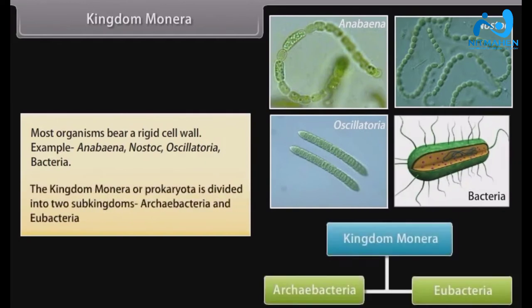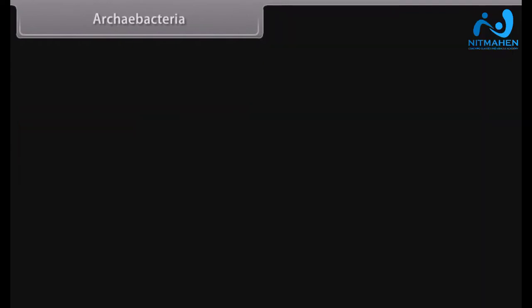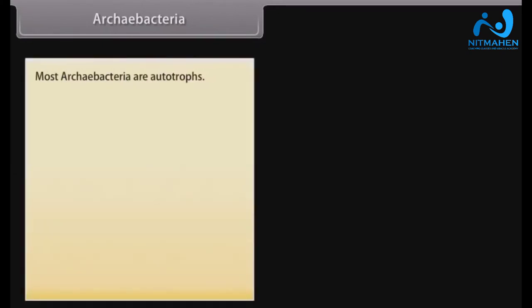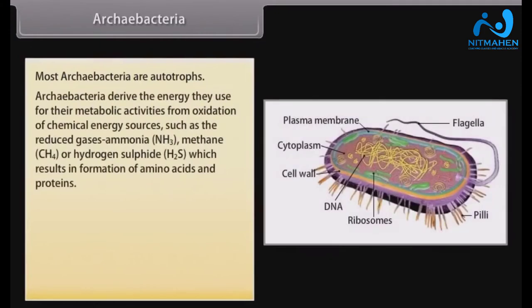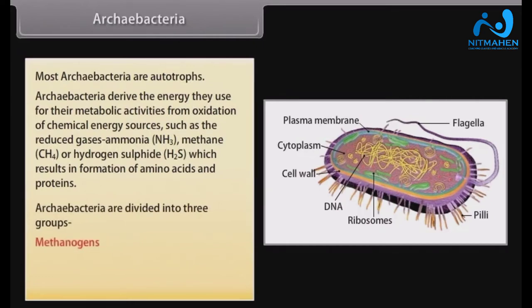Archaebacteria. Most Archaebacteria are autotrophs. They derive energy for their metabolic activities from oxidation of chemical energy sources, such as reduced gaseous ammonia (NH₃), methane (CH₄), or hydrogen sulfide (H₂S), which results in formation of amino acids and proteins. Archaebacteria are divided into three groups: Methanogens, Thermoacidophiles, and Halophiles.